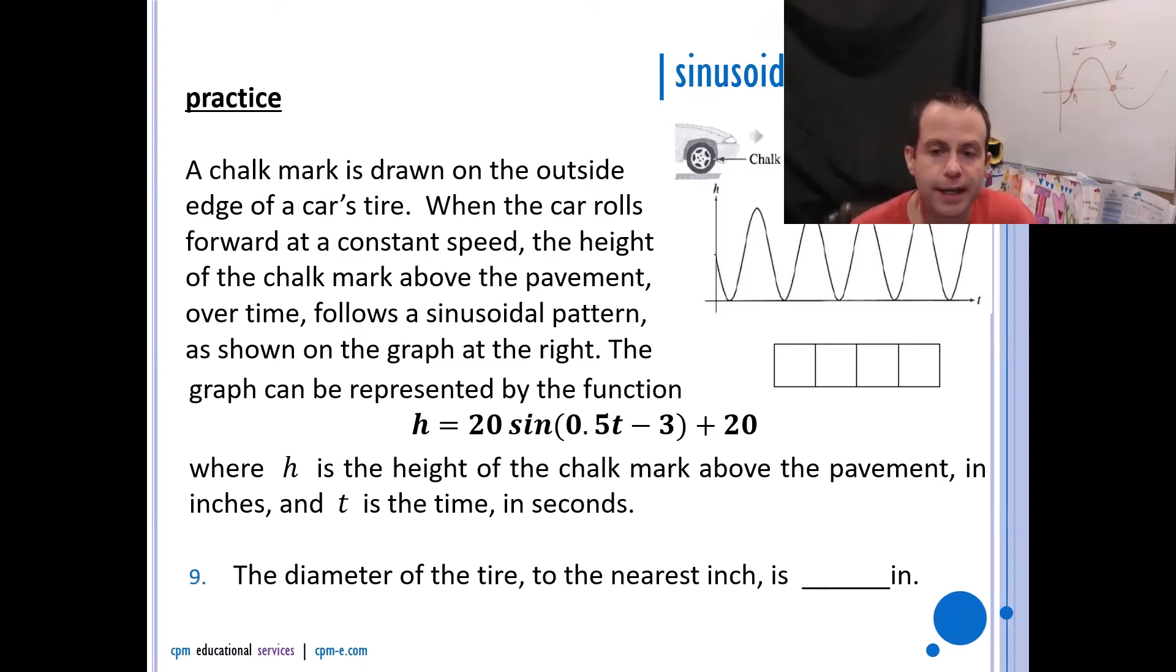First of all, the diameter of the tire. Well, what I'd want you to know right off the bat is your amplitude in these real-life situations, your amplitude is always the radius of the tire. So if I know the radius of the tire is 20, the diameter of the tire has to be 40 because radius is half of your diameter.